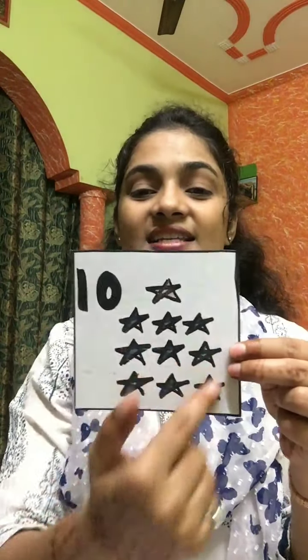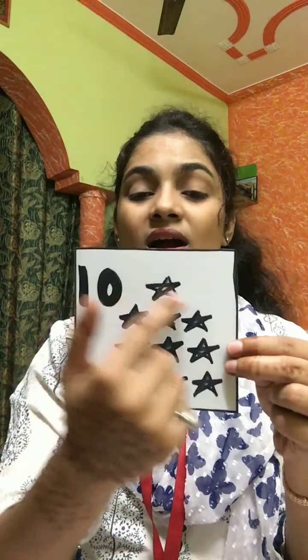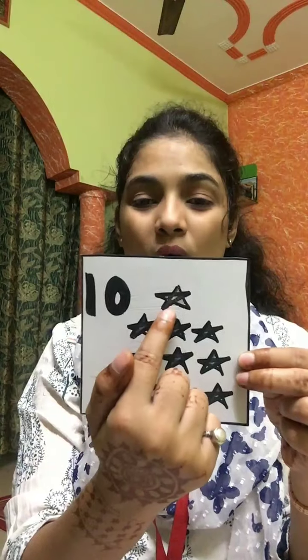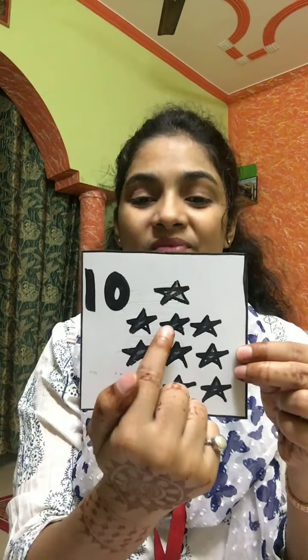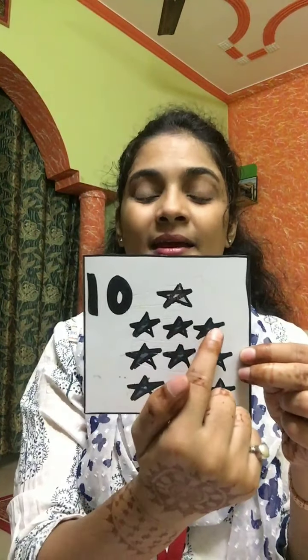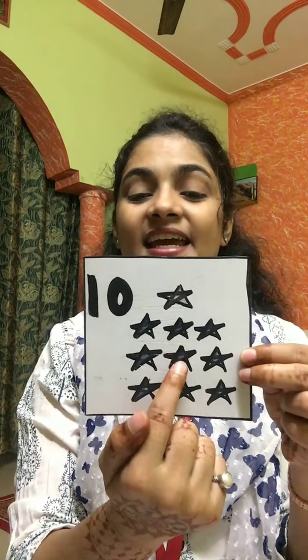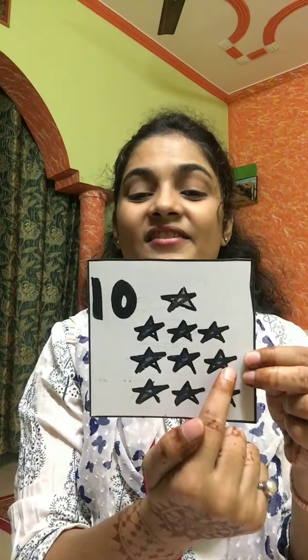Here are some stars. Now count all together: 1, 2, 3, 4, 5, 6, 7, 8, 9, 10. Here are 10 stars.